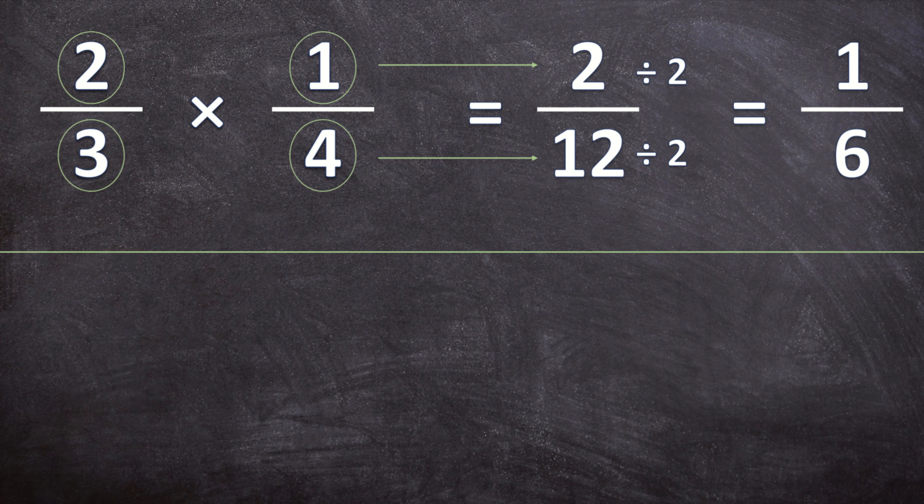Now let's take this exact example and we do our second method. This is exactly the same example 2 over 3 times 1 over 4. But before we multiply the numerators and denominators we're first going to simplify the fractions by using cross cancellation.